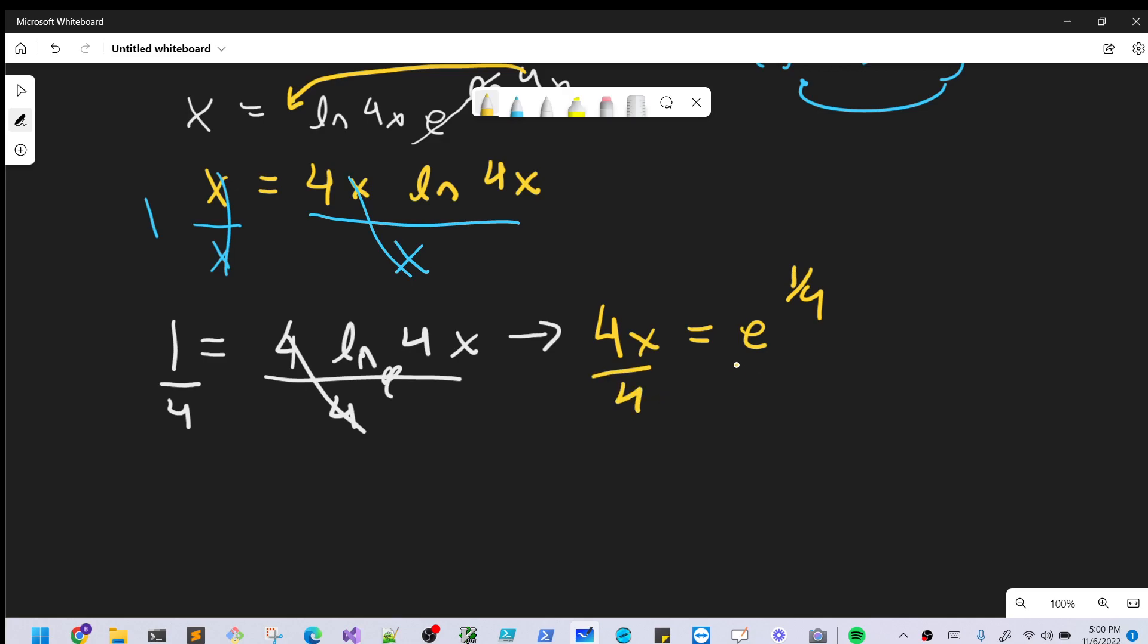Divide both sides by a 4, and we've isolated our X. And so we're just left with X equals 1/4 E to the 1/4th. That's our answer.